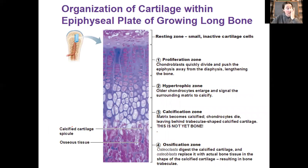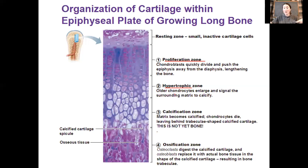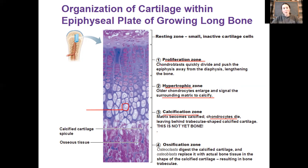Looking at some histology, we can break this process down further. In the proliferation zone, we're actively building more cartilage — chondroblasts are secreting proteoglycans, making the matrix, trapping themselves in the lacunae. In the hypertrophy zone, previous chondrocytes start to enlarge and signal the surrounding matrix to start calcifying. This calcification then triggers the chondrocytes to die, leaving behind big open spaces — the lacunae where the chondrocytes used to live. This is just calcified cartilage, not yet bone.